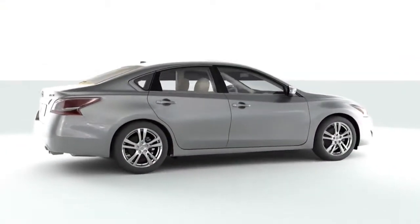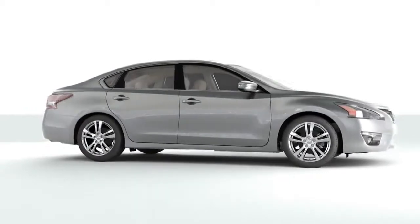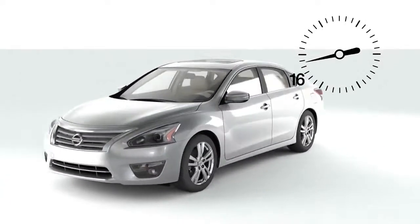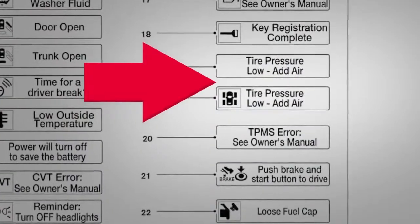Repeat this procedure for any additional underinflated tires. After tire pressures are adjusted, drive the vehicle at speeds above 16 miles per hour. The tire pressure low add air warning message and the low tire pressure warning light will disappear.